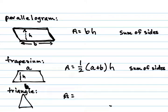And for triangles, the area is one-half times the base times the height, where the height is always measured from the base to the furthest point.